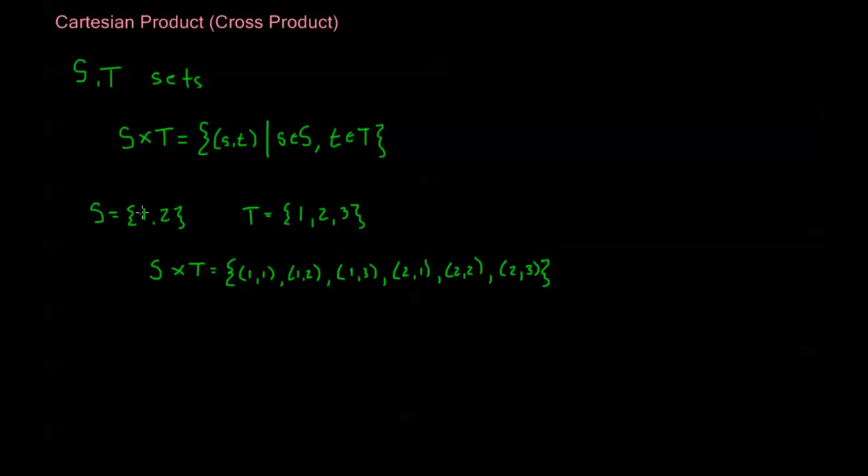Now notice that S is a set of numbers here, T is a set of numbers, but S cross T is a set of ordered pairs. So we don't have any relationship like subsets. We don't have anything like S is a subset of S cross T. This doesn't really make sense because the elements in S are just integers where the elements in S cross T are ordered pairs. So it doesn't really work that way.